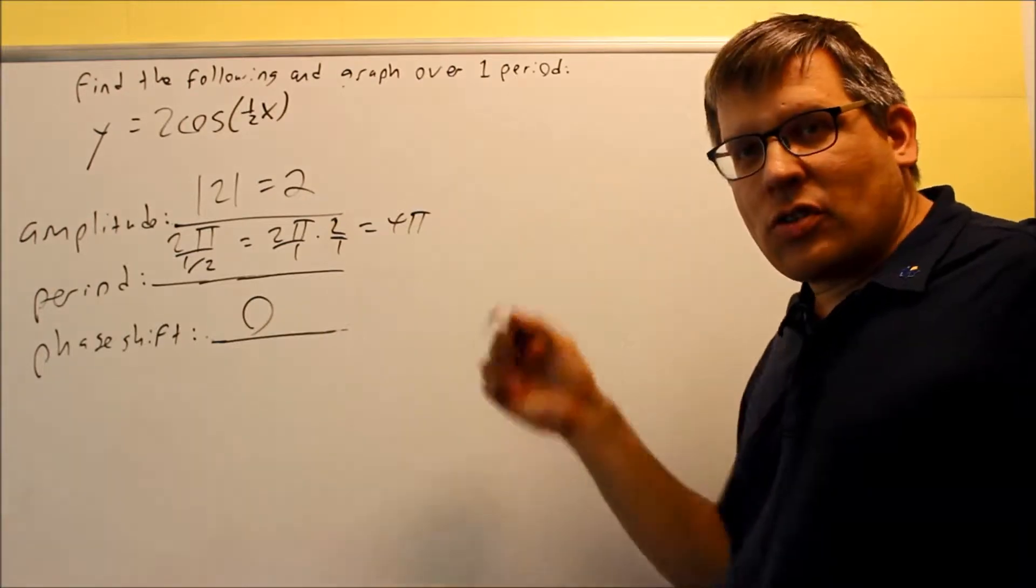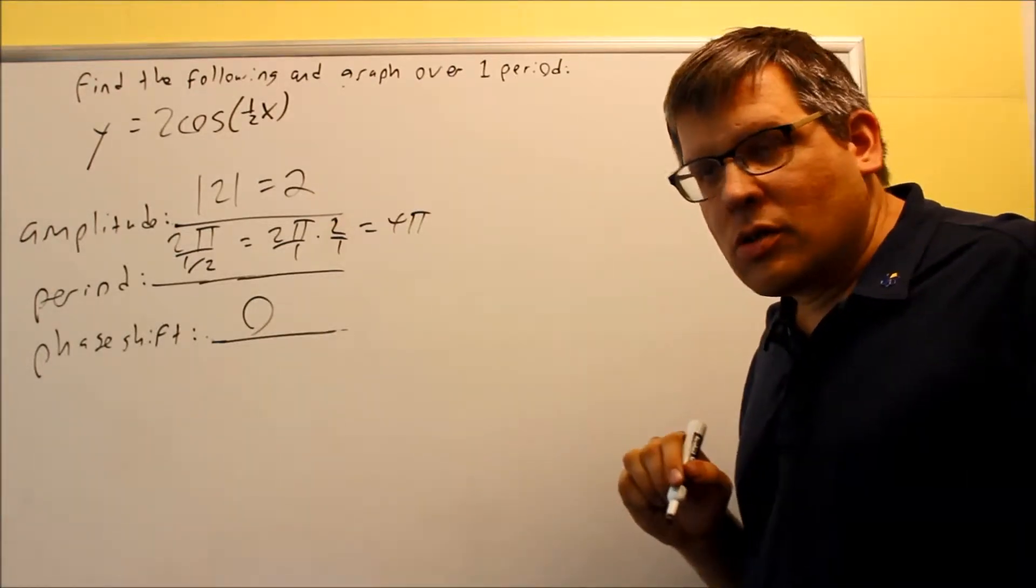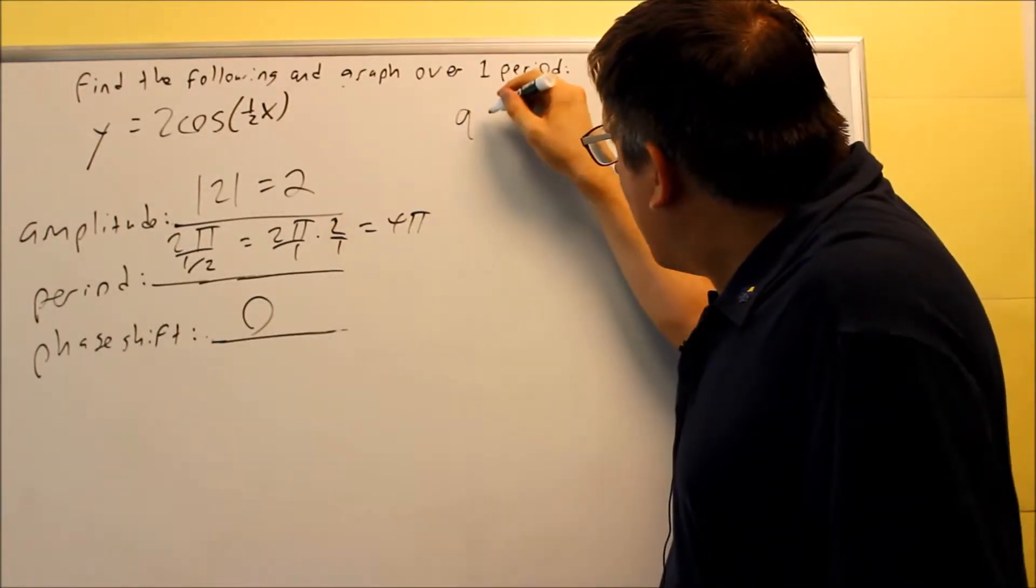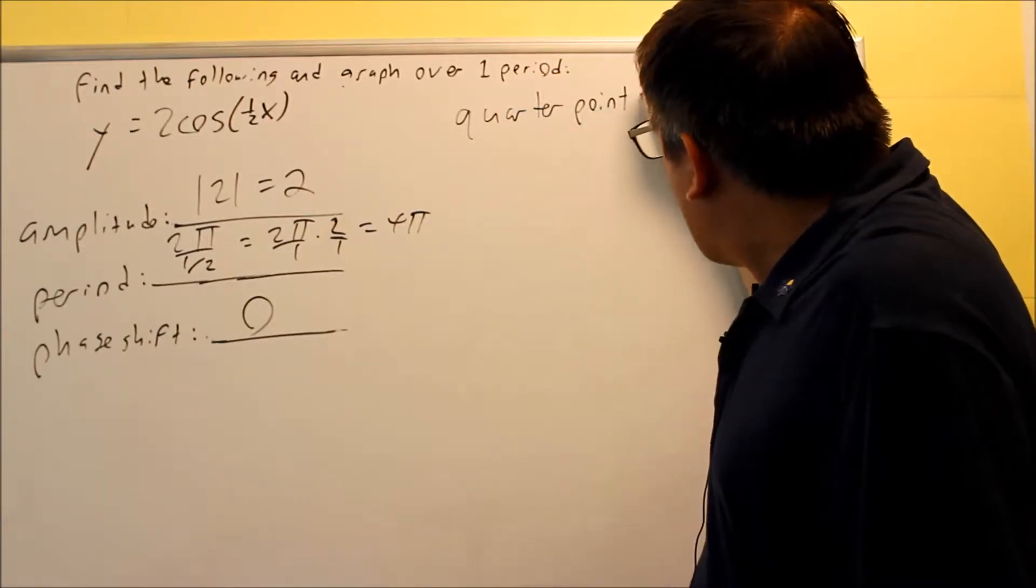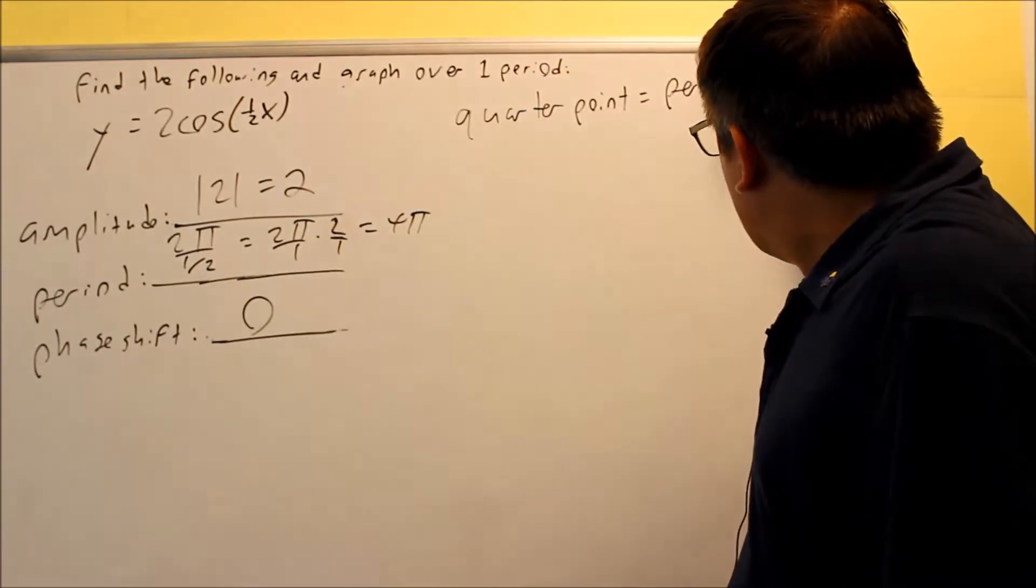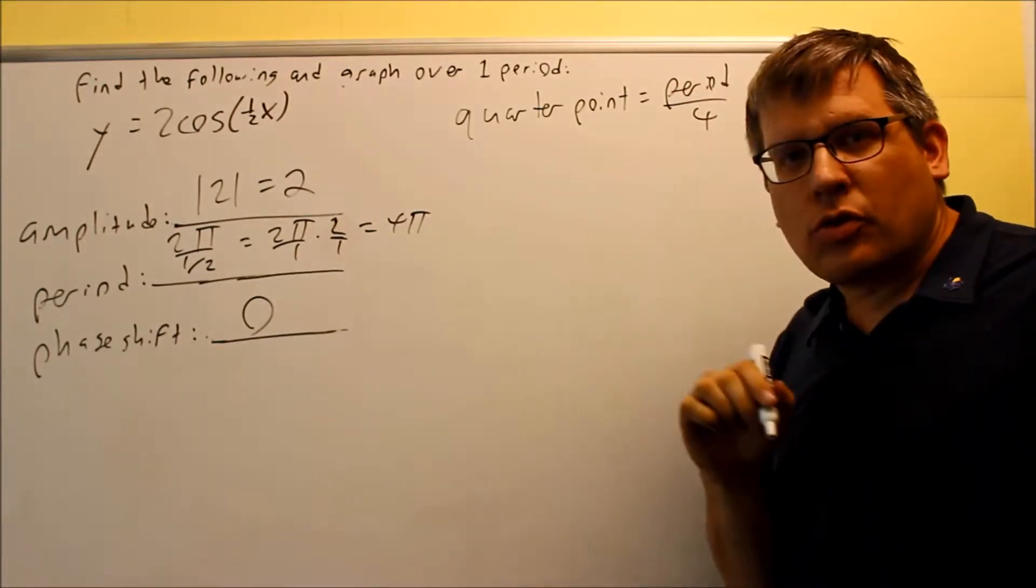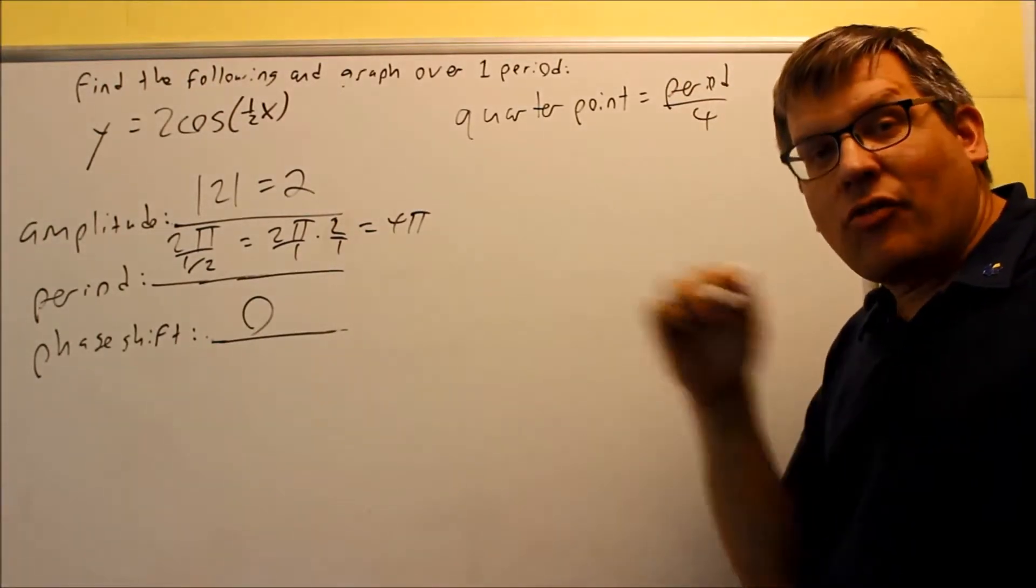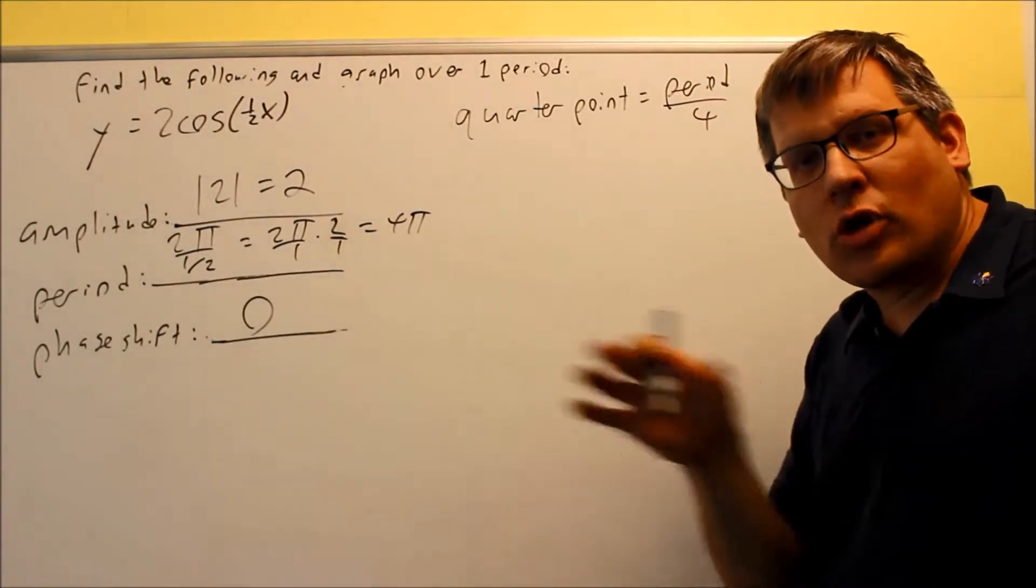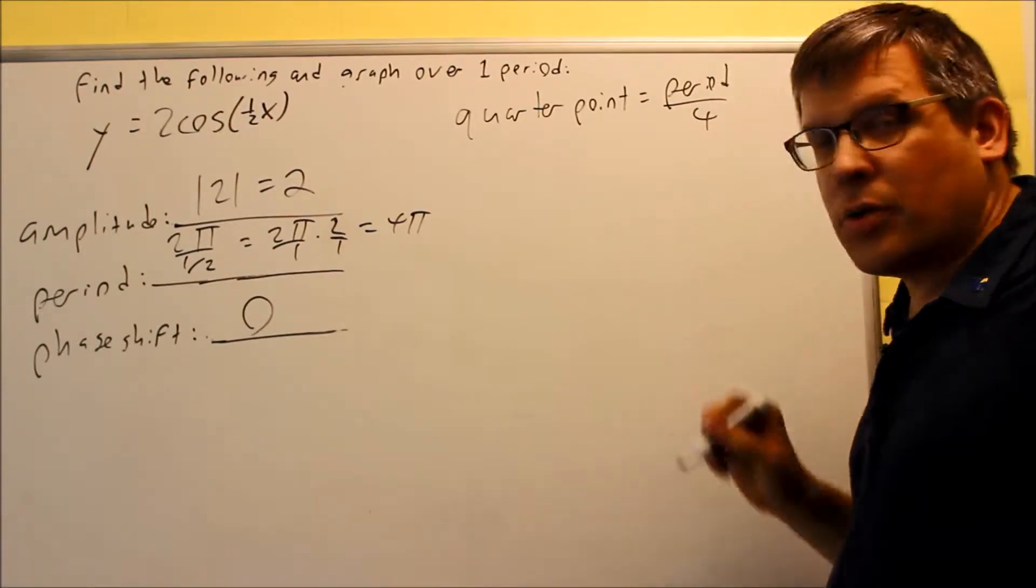Because your period is different, this is when you want to use the quarter point. Quarter point, just to review that, quarter point is always going to be your period divided by 4, because these graphs we've been looking at, you have 5 key points and it actually makes 4 different regions. That's why you're always going to do your period divided by 4.